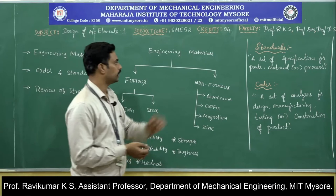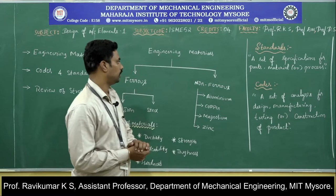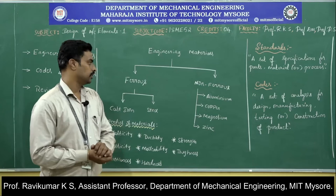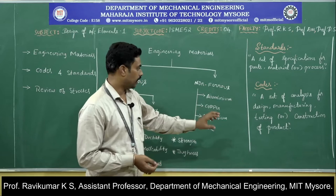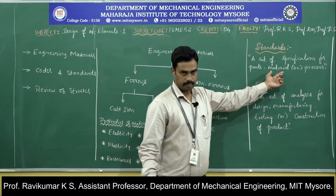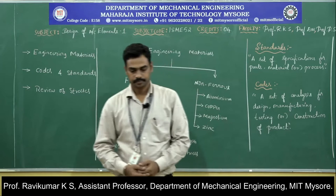Moving on to standards and codes: a standard is defined as a set of specifications for parts, materials, and processes. A code is defined as a set of analyses for design, manufacturing, testing, and construction of a product. The key difference is that standards are specified for materials or parts, while codes are specified for processes.